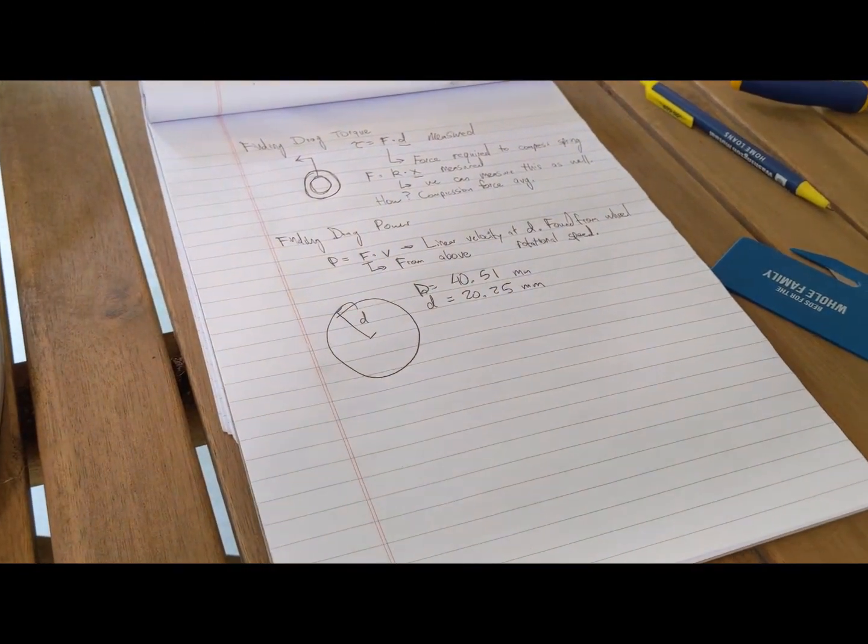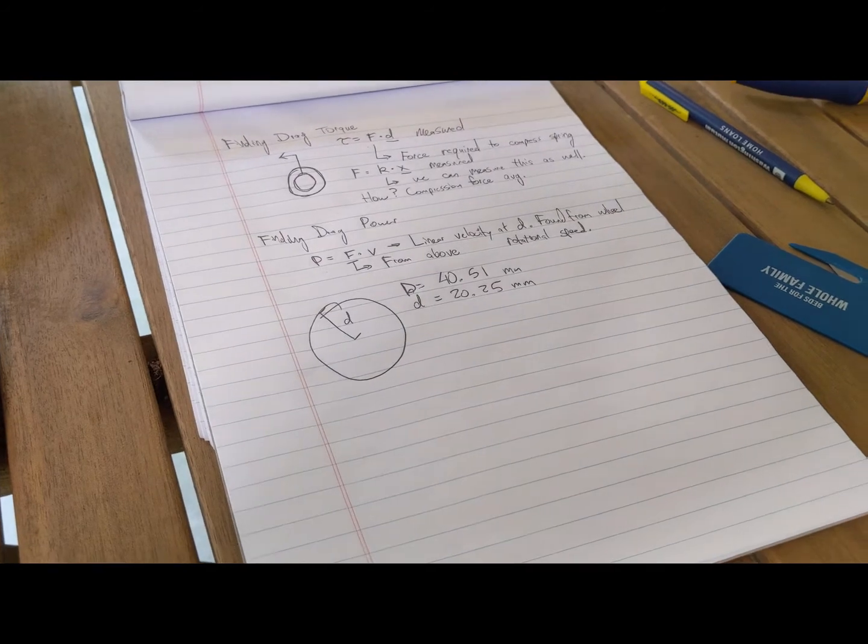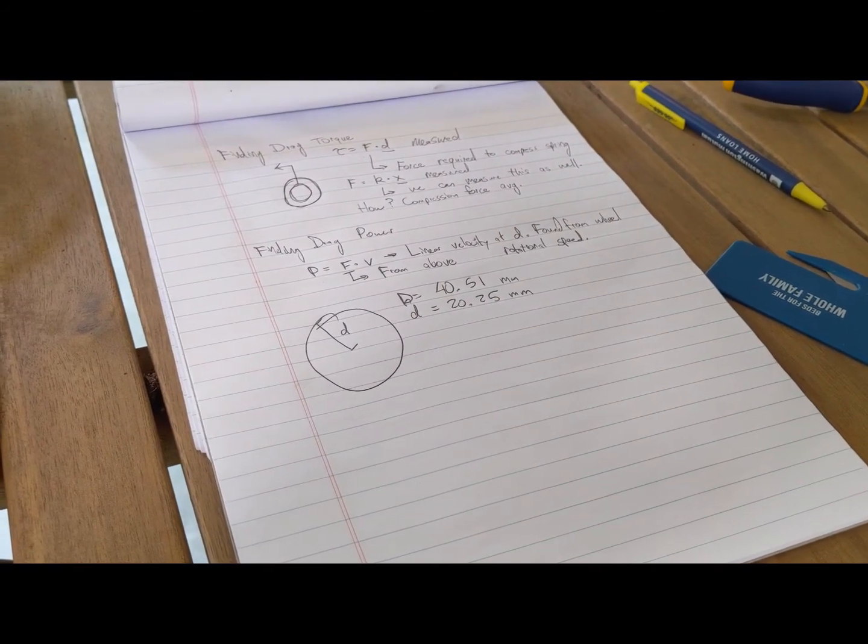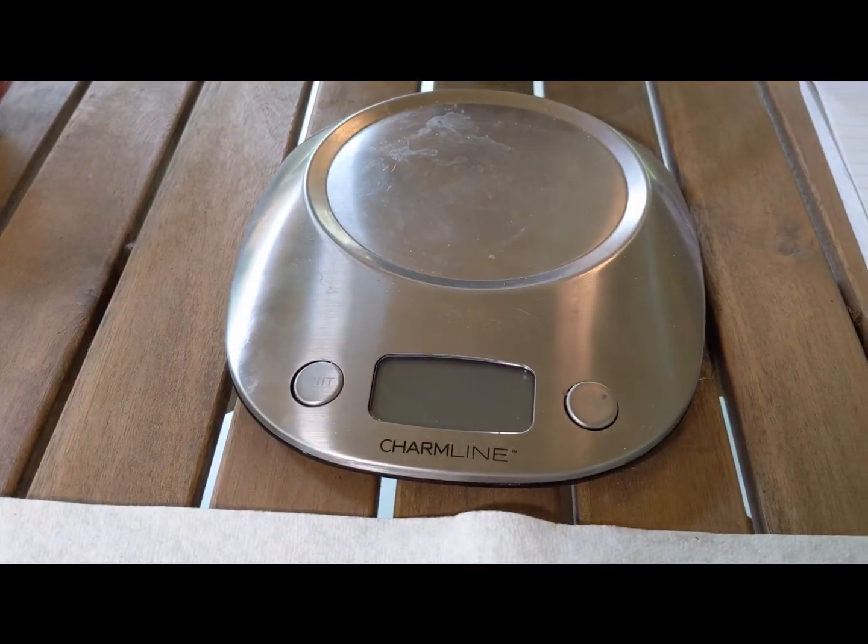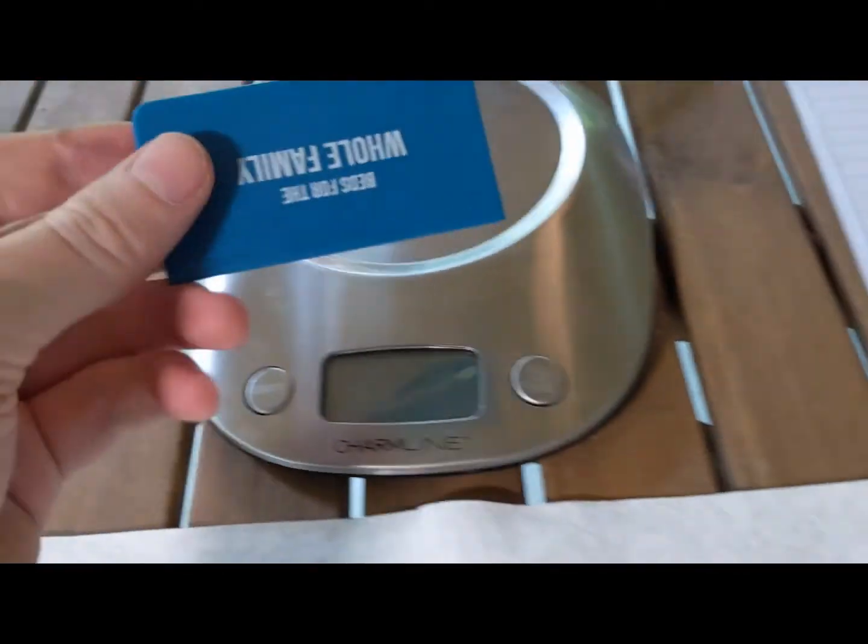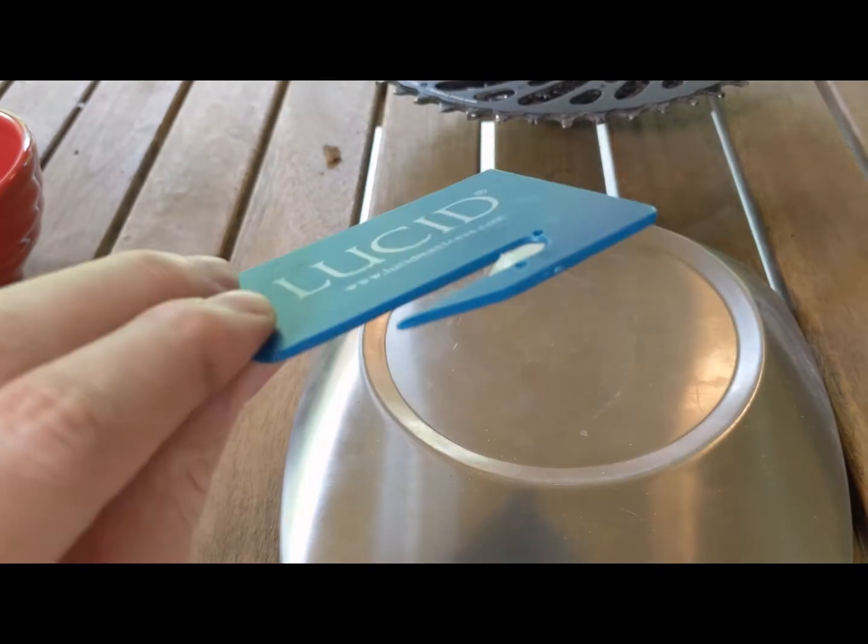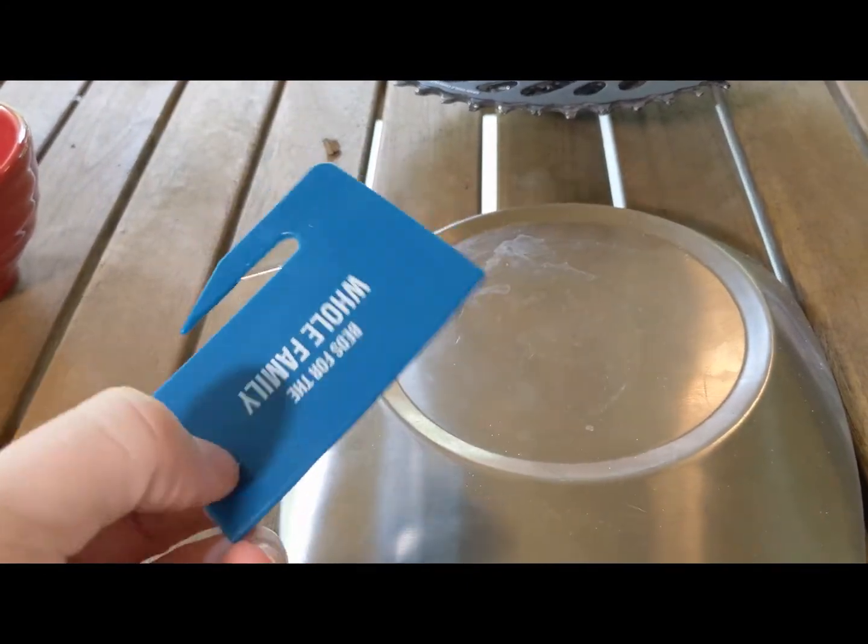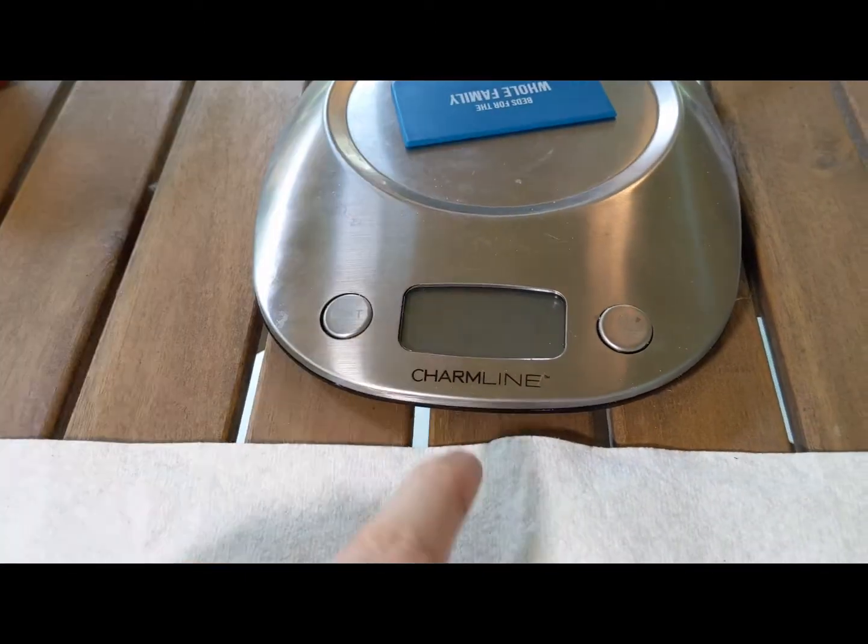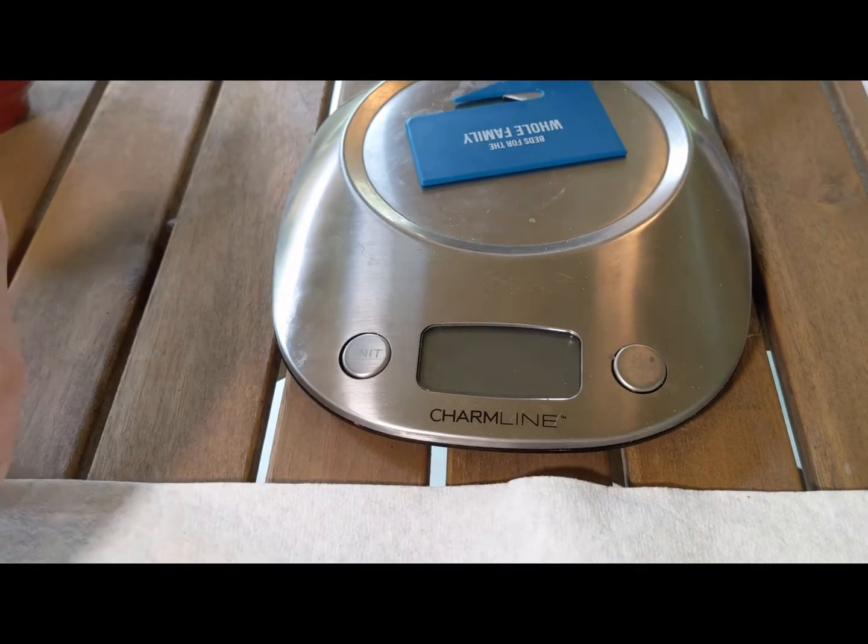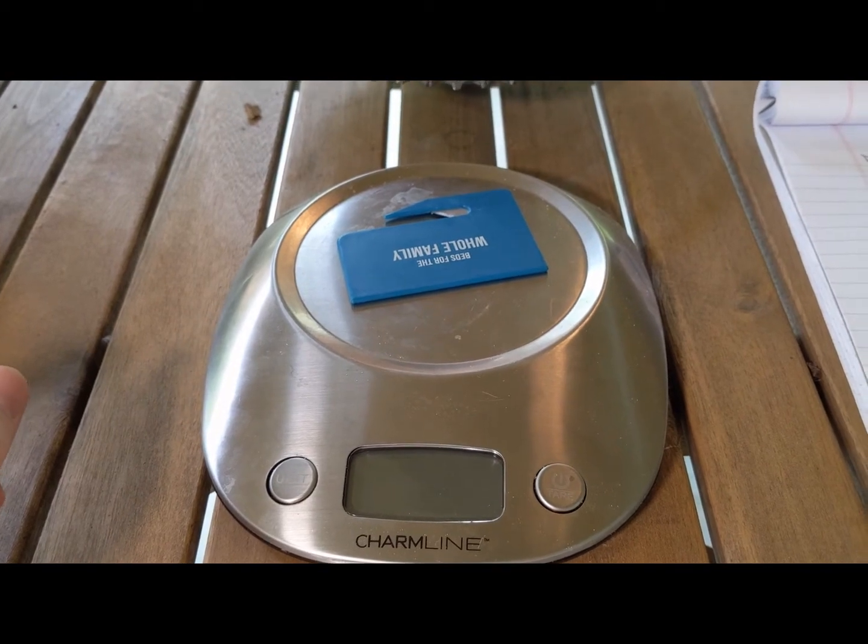Now that we have the distance small d at 20.25 millimeters, the next thing we want to do is find the average spring force. To do that, we're going to take the springs out, place them on the scale here, and then use a hard surface that's flat. You can use like a plate or anything like that. I just got this letter opener since it's plastic and fairly hard. We'll press it down and measure with the scale to see what force it takes to compress all six springs, then divide that by six to get our average force.